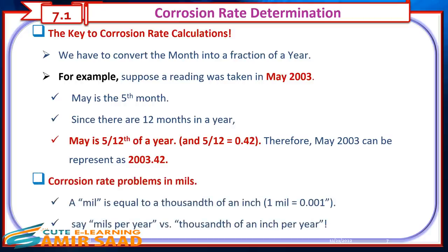Corrosion rate problems are often expressed in mils. One mil equals one-thousandth of an inch (0.001 inch). Units may be expressed as mils per year versus thousandths of an inch per year.